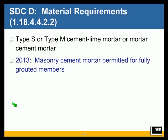Also, in seismic design category D, there are material requirements: only type S or type N cement lime mortar or mortar cement mortar is allowed. There is an exception in the 2013 code that masonry cement mortar is permitted for fully grouted members.